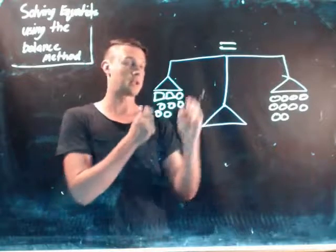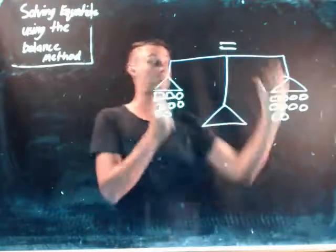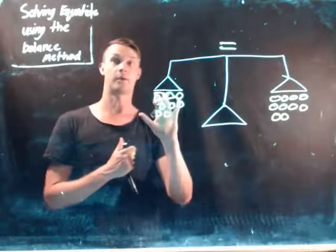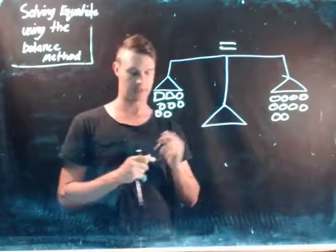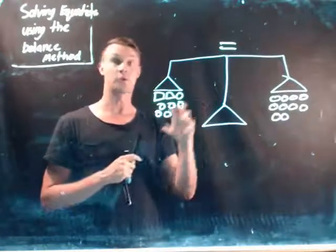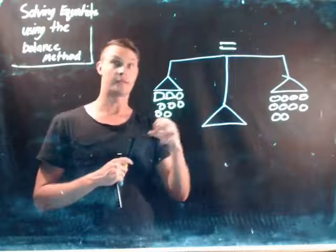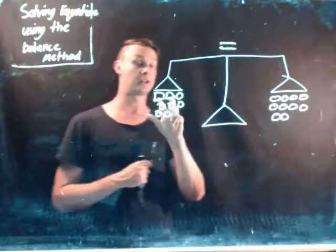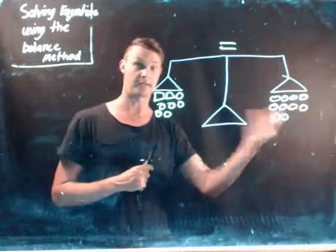So what we do is we're going to start to break down both sides of this equation until we're left with one biscuit. And that's basically the balance method. So effectively what I do, I take away five of these lollies. That means I need to take away five on that side. Then I'll be left with two biscuits and five on that side.